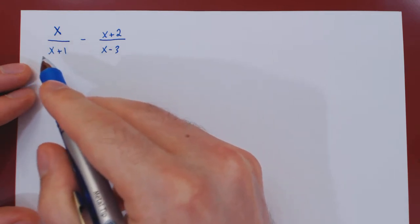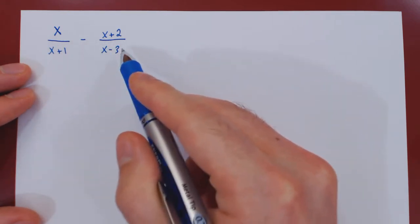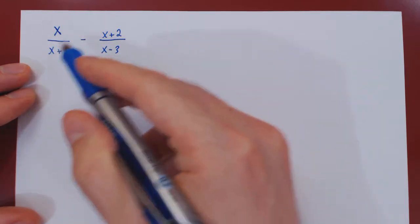And as both fractions do not share a common factor on the denominator, we can go right ahead and cross multiply.